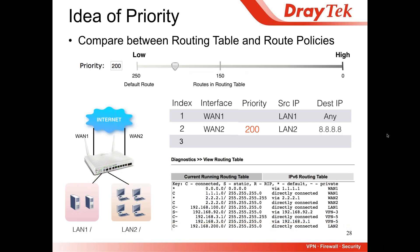Let's take another example: from LAN2 to 8.8.8.8, we give the policy priority as 200. The route we compare is the default route, since 8.8.8.8 doesn't belong to any LAN or VPN subnet — it's on the internet. By default, the default route is WAN1 with priority 250. The policy has priority 200, which is higher, so we send to WAN2 instead of following the default route to WAN1.